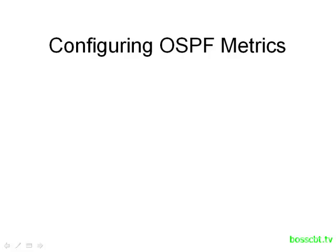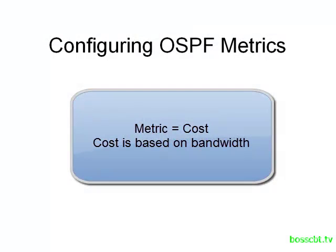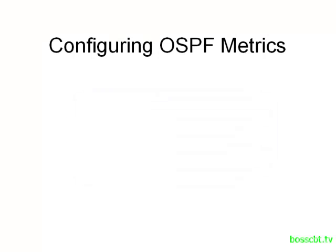Hello and welcome to this tutorial. We're going to talk about how we can change the OSPF metric. The metric used in OSPF is cost, and that is derived from bandwidth. So if we want to influence how a router chooses its best path to any given destination, we have to change the cost. We have three ways to do that, and that's what we're going to cover here.